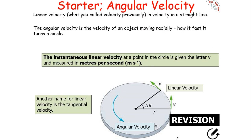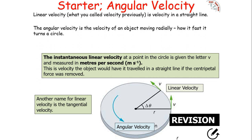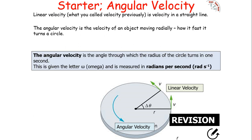The instantaneous linear velocity is given the symbol V and is measured in metres per second. It is the velocity an object would travel at if it had no centripetal force acting upon it — moving in a straight line. That is why we call it tangential velocity: when you remove a centripetal force, the object moves at a tangent to the circular motion.